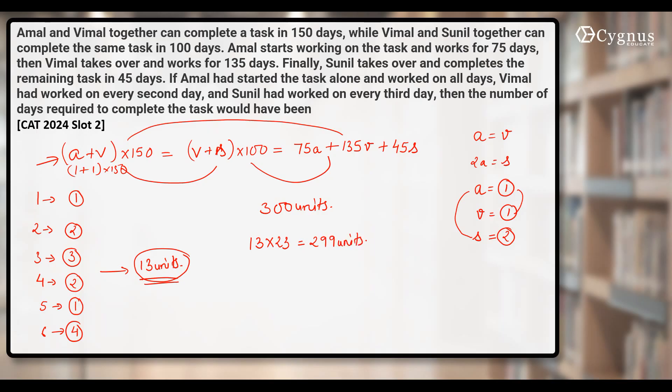Still one more unit is left. Whose turn is now? Seventh day, Amal will be working alone and he'll do the remaining one unit. That makes 299 plus one. So the whole work will be finished now. I counted how many such cycles? 23 cycles. Each cycle is of six days. That means they must have worked for 23 into six. 23 into six will give you 138 days. And still one more unit was left which was finished by Amal alone. That means the answer becomes 138 plus 1, 139 days. This was a very lengthy question.